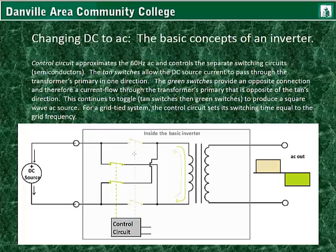Looking at the TAN switch when it's closed: the DC source cannot flow through the open paths, so it flows through here, goes through the transformer primary in this direction, and back to positive.